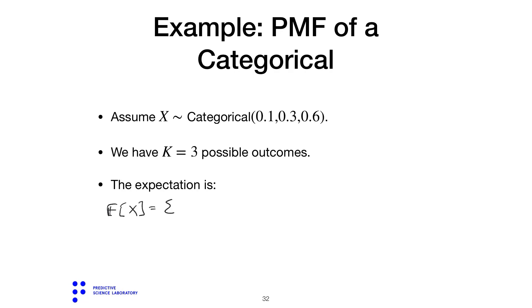Similarly, you can work out the expectation of this random variable by following the formula. The expectation is the sum of x times the probability mass of x, where x goes over all the possible values. So we have c1 times 0.1 plus c2 times 0.3 plus c3 times 0.6.